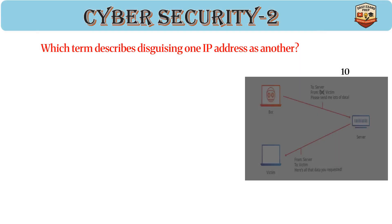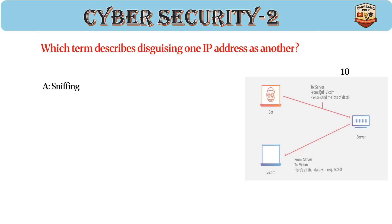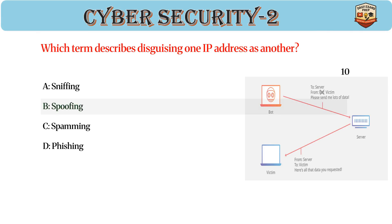Which term describes disguising one IP address as another? Answer: B. Spoofing. Spoofing fakes IP or MAC addresses. Used in MITM and DoS attacks. Prevented by packet filtering and authentication.